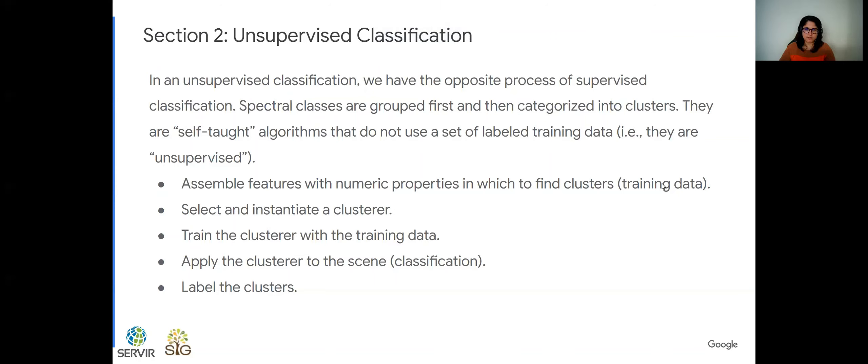So now we will explore unsupervised classification, which is sort of the opposite of supervised classification. We don't have training data for unsupervised, so spectral classes are grouped first and then categorized into clusters. They're called self-taught algorithms because they don't use a set of labeled training data.